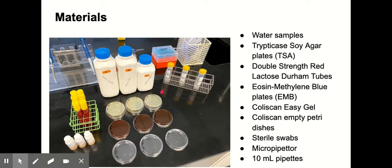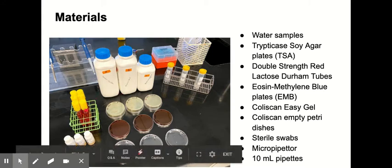Then we also had the TSA plates, which is this top row of plates here. We'll also need the double strength red lactose broth tubes, so that's this red broth over here. The EMB plates are these red plates, the second row here.